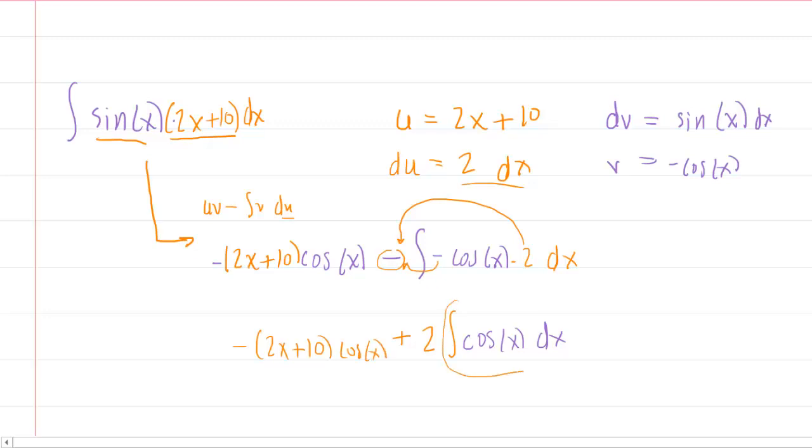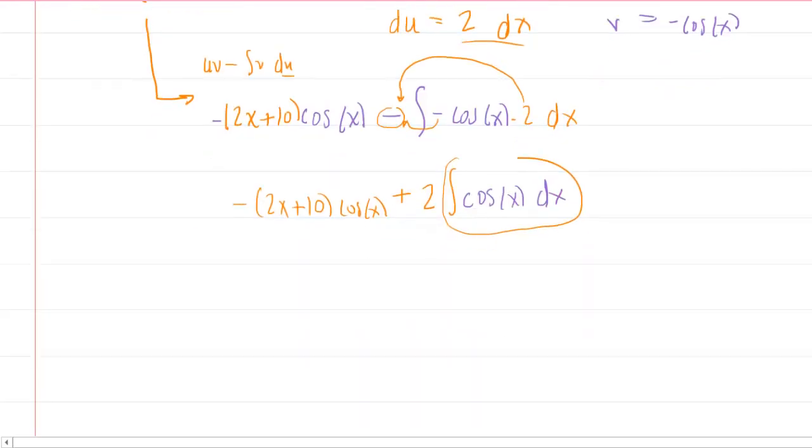Now we just have to integrate cosine of x, and the integral of cos x is sine x. So we end up with plus 2 sine of x.